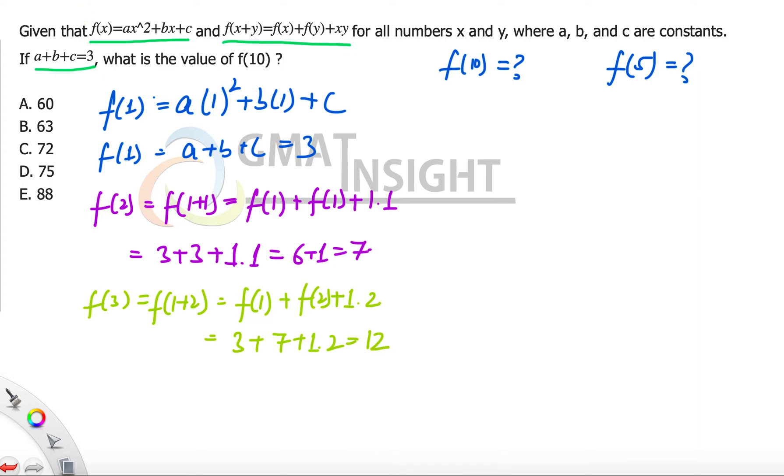Using f(3), we are going to find out f(4) exactly in the similar way, but for that now I'm writing f(2+2), which means f(2) + f(2) + 2×2, and that gives us f(2) is 7. 7 + 7 + 2×2 is equal to 14 + 4, which is 18.